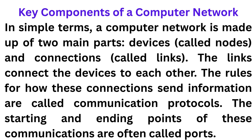Key components of a computer network: in simple terms, a network is made up of two main parts — devices and connections. Devices are called nodes, and connections are called links. The links connect the devices to each other. The rules for how these connections send information are called communication protocols. Protocols means a set of rules. The starting and ending points of communications are often called ports.